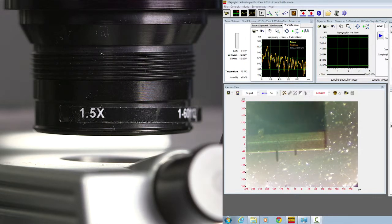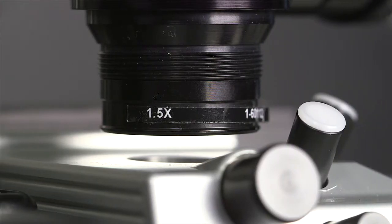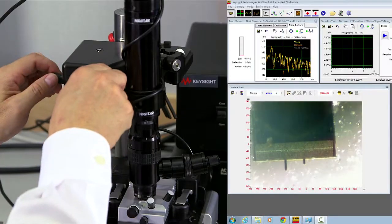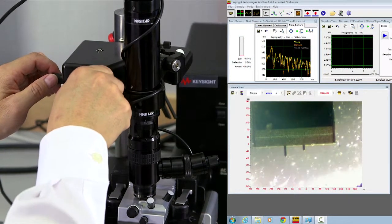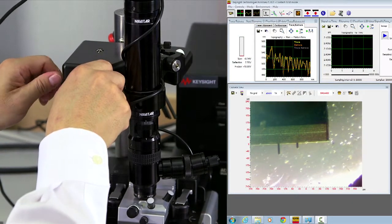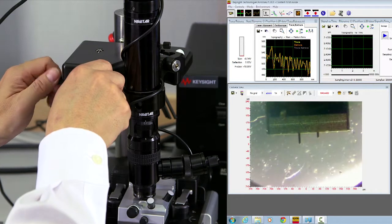Now you can see that the cantilever tip is coming to focus and notice the distance between the optical microscope objective and AFM scanner is very close. It's about 5 mm in distance. Here, translation again. And move the cantilever tip into the center of the view.